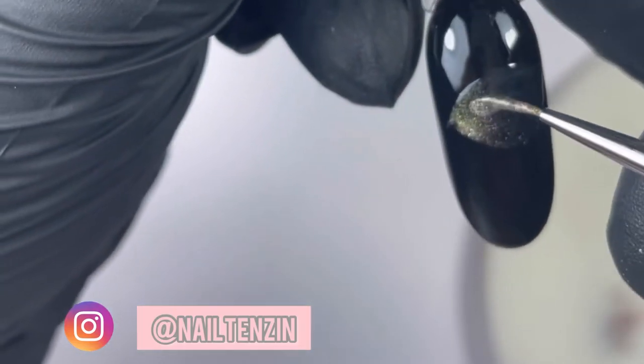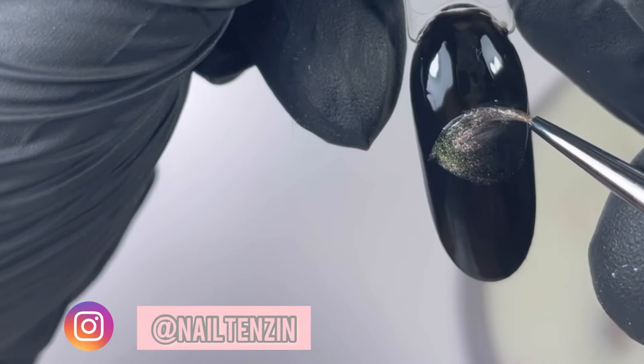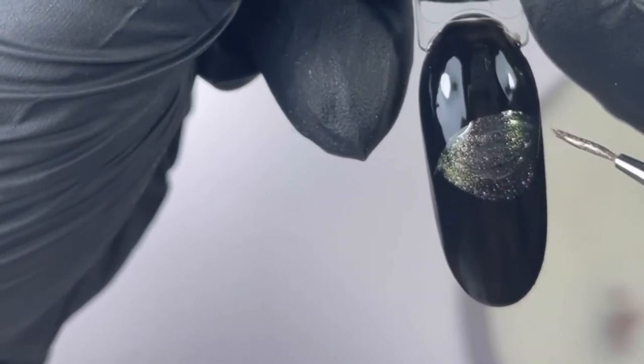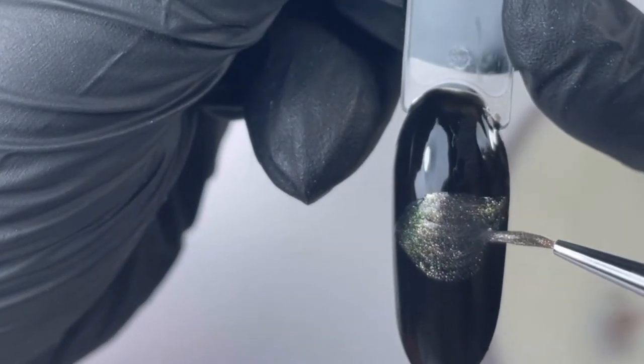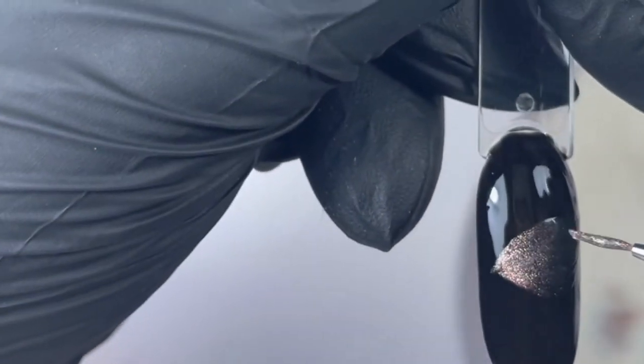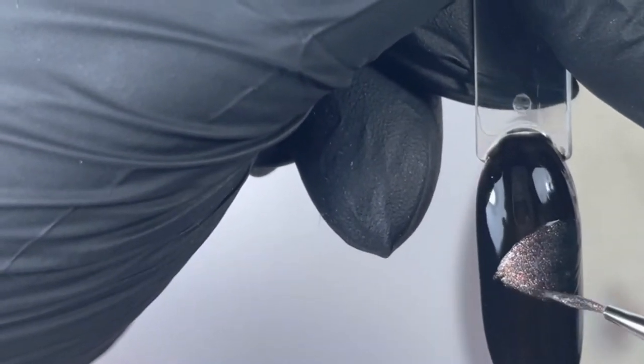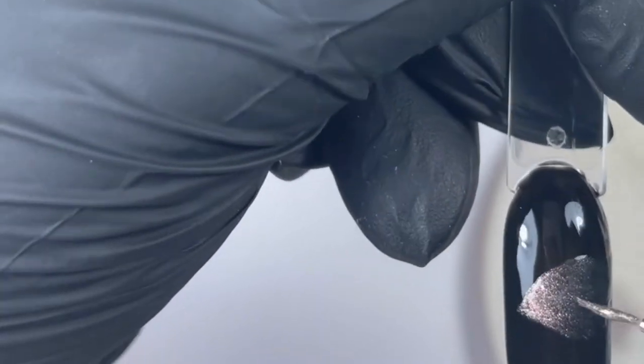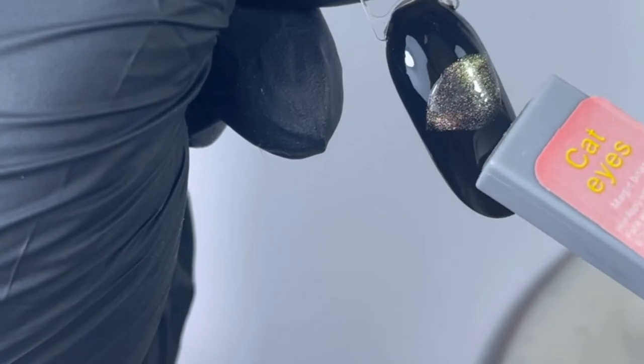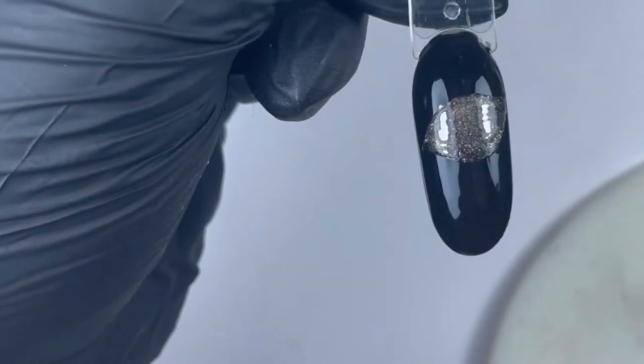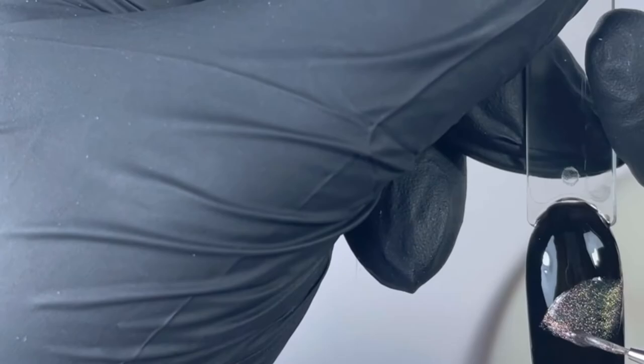Now I am using the same gel polish on the top of the one that I already created. I'm using my magnet one more time to kind of create the image that I have in my mind, and once I'm satisfied, I will let it cure for another 60 seconds.